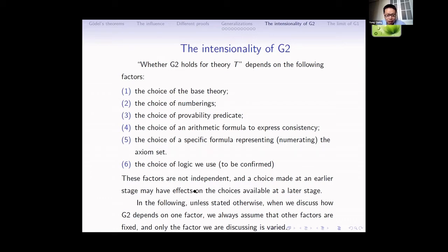Important remark: these factors are not independent, and a choice made at an earlier stage may have effects on the choice at a later stage. Unless stated otherwise, when we discuss how G2 depends on one factor, I always assume that other factors are fixed and only the factor being discussed is varied.